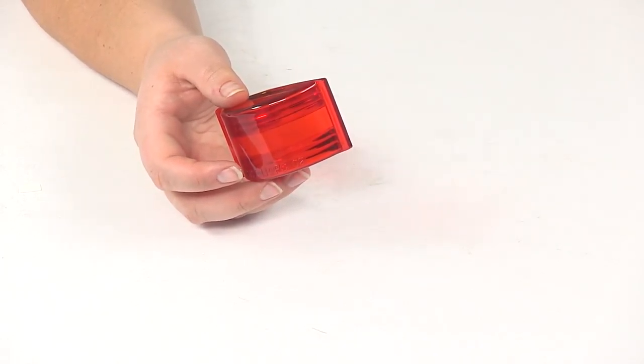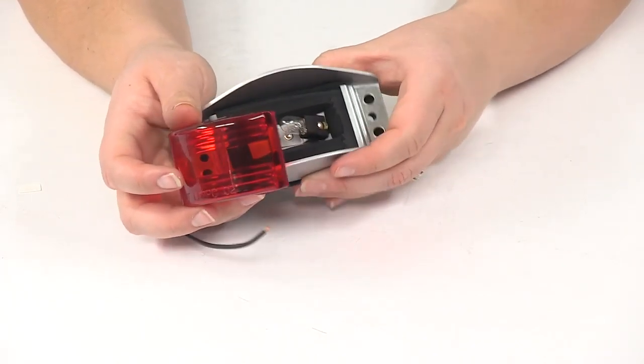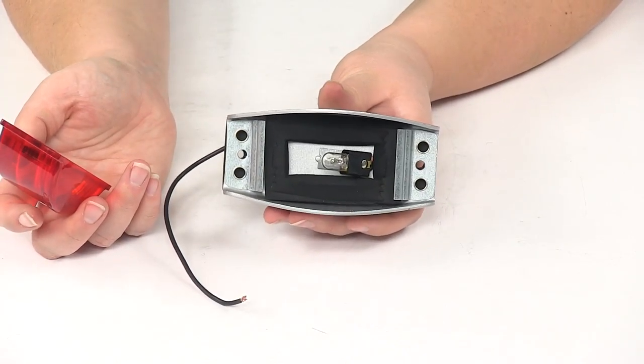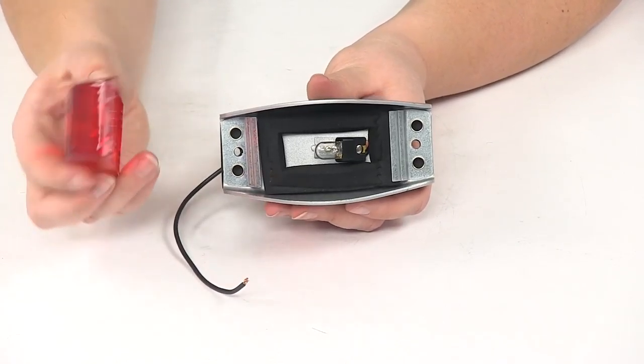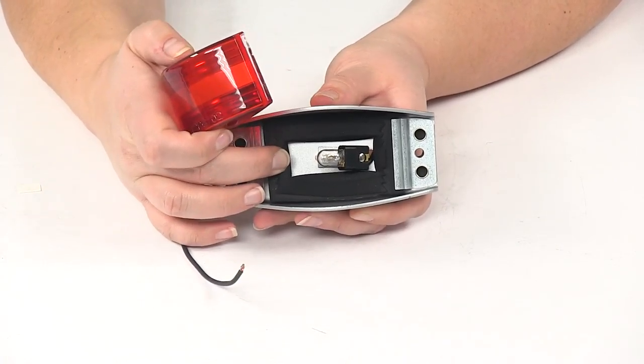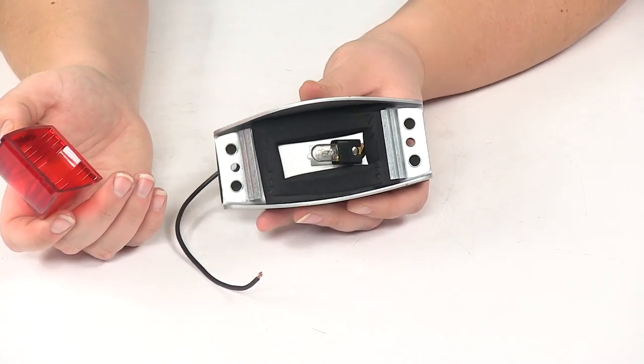The way that you would reinstall that on your light, you see you have our housing here. It's got this cushion or gasket going around the inside of the light.